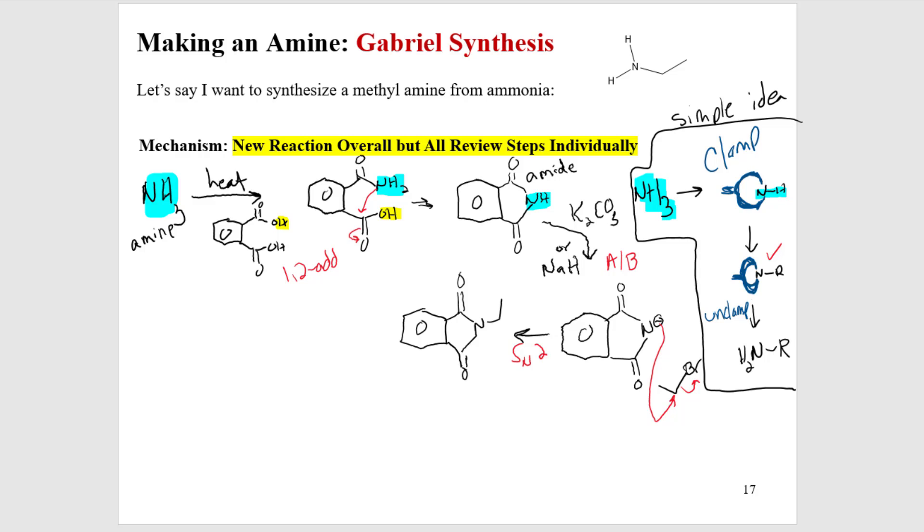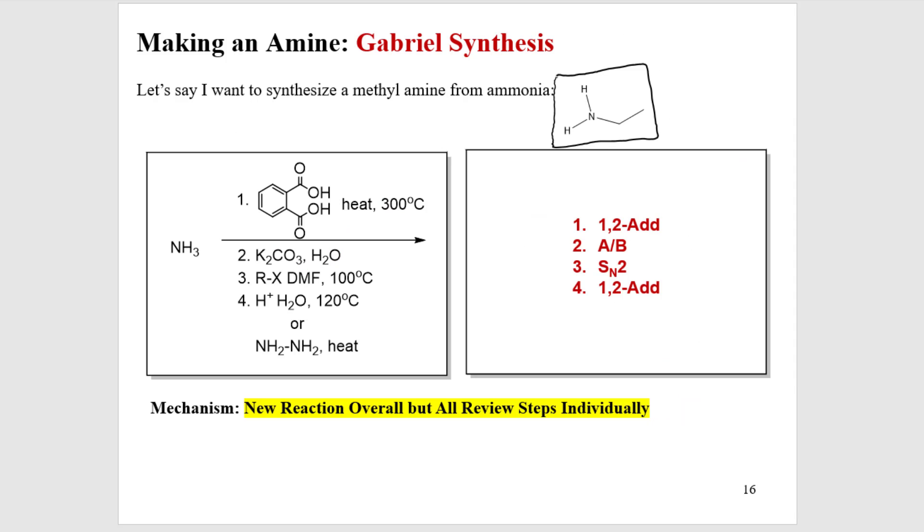We've just done our SN2 reaction. So now we are here. We have just put the R group onto the nitrogen. We're almost there. We clamped, we removed a proton so that we could create a strong nucleophile and then introduce our electrophile, whichever one we wanted. In this case, because we're aiming for ethylamine, I'm going to use ethyl bromide. I am now at the point where I've put on the group I wanted safely. And now I'm ready to unclamp.